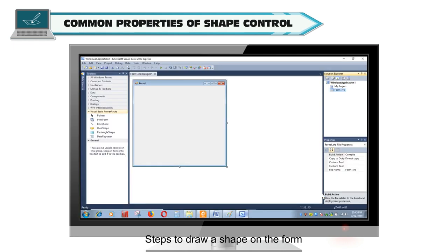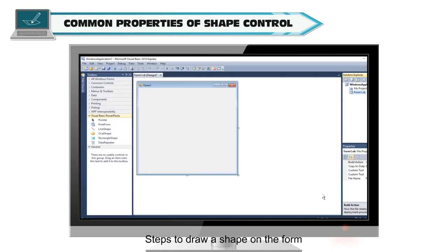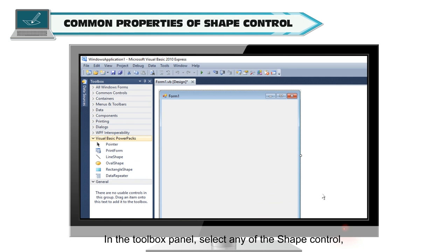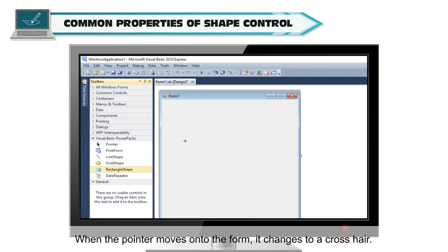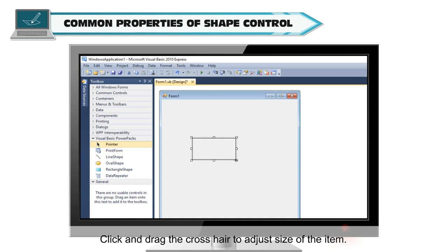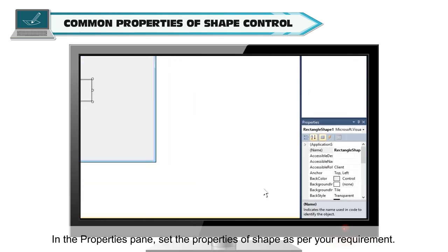Steps to draw a shape on the form: In the Toolbox panel, select any of the shape controls. For example, select Rectangle Shape Control. When the pointer moves onto the form, it changes to a crosshair. Click and drag the crosshair to adjust the size of the item. In the Properties pane, set the properties of the shape as per your requirement.